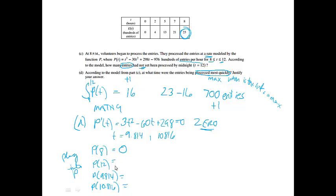So if I plug 8 into the P, I get 0 as an answer. If I plug 12 in, I get 8. If I plug in 9.814, I get 5.089. And if I plug 10.816 in, I get 2.911. And I am looking for a max and I notice that the 8 is the biggest number I get.